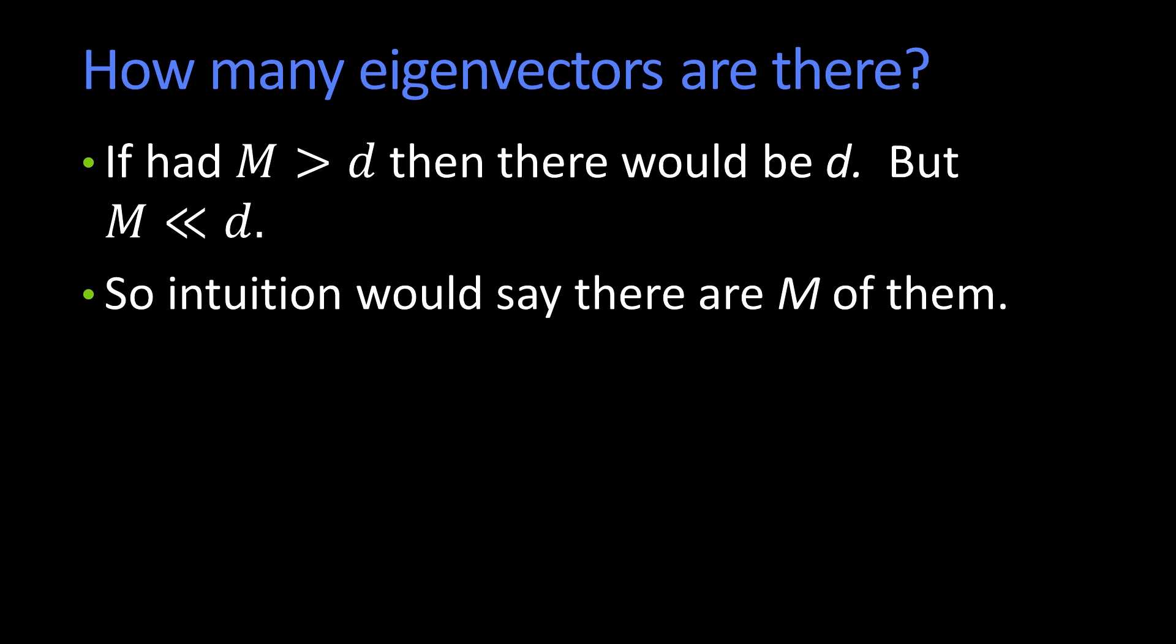So how many of them are there? Well, your intuition might say, I've got M independent things, so there must be M of them. But actually, your intuition was wrong. And in fact, a better intuition would be the following.